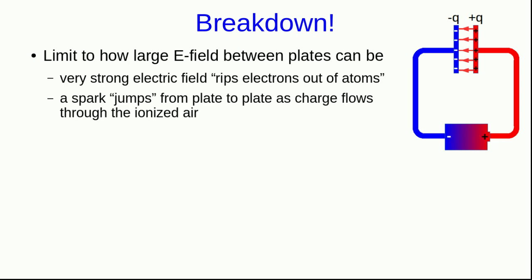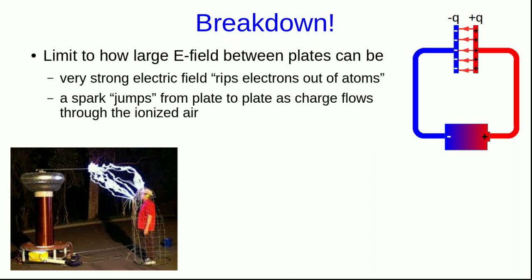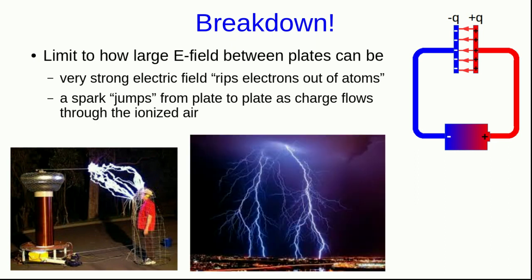Once you ionize the air it conducts, a spark jumps from plate to plate, and charge will flow through the ionized air, and we're no longer storing charge on the plates. We're conducting charge from one to the other. This is called an electric breakdown, and it's exactly what happens any time an electric spark jumps from one thing to another. The most dramatic example is lightning.